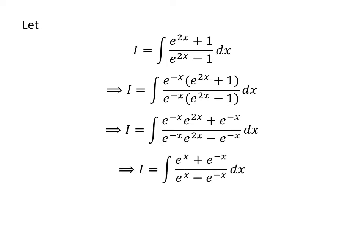e^(-x) times e^(2x) is equal to e^x. So, i is equal to the integral of (e^x + e^(-x)) / (e^x - e^(-x)) with respect to x.